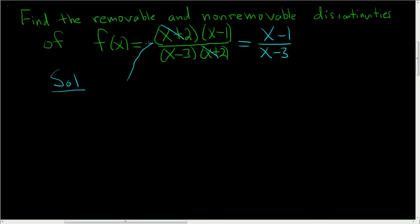Anytime you have a cancellation like this in a rational function, it leads to a hole. We have a hole at x equals negative 2. How do you get the negative 2? It's whatever makes this 0 — negative 2 plus 2 gives you 0. It turns out that if you have a hole in a rational function, it's always removable.